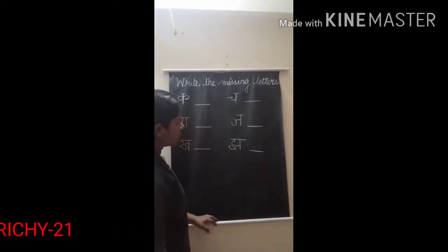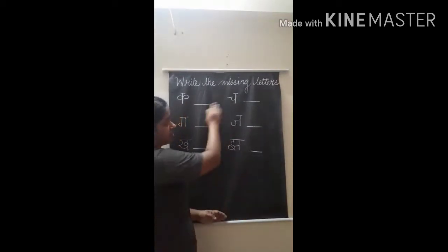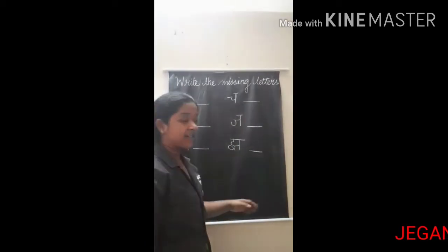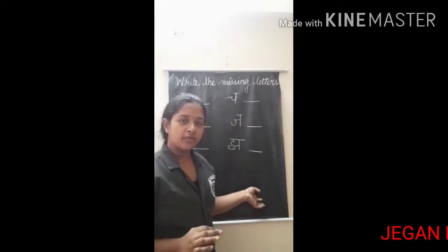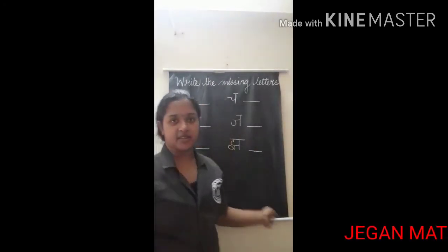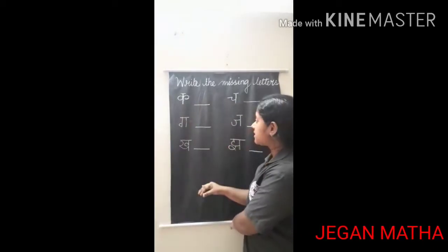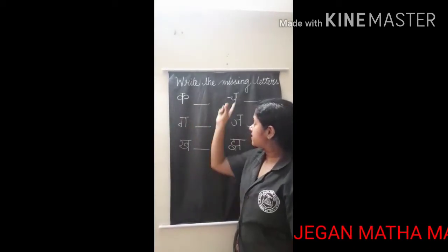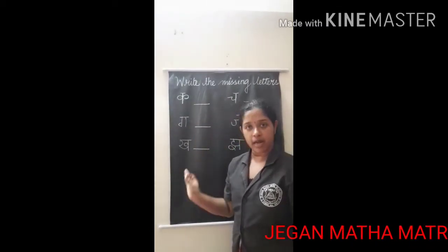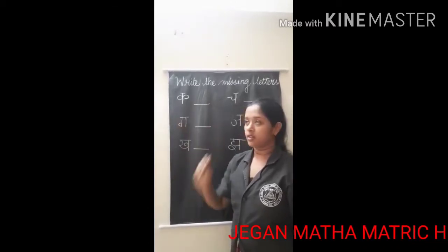So here, 6 consonants have been written with 6 blanks. We have to fill in the blanks by writing the next letter of the given consonants. That is, 6 letters are given and 6 blanks are also here.